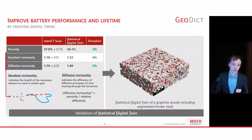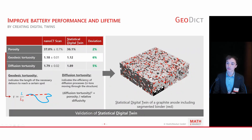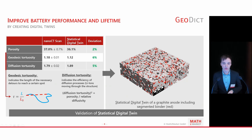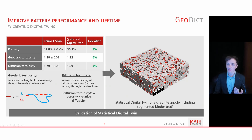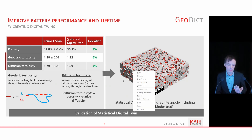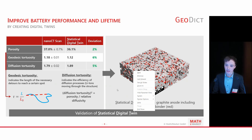This is an example where we have analyzed the porosity, but also the geodesic tortuosity and the diffusion tortuosity. As you can see, the digital twin matches the real-world structure quite well, which comes out of our microCT. Tortuosity is simply a measure of how far molecules or ions have to move to reach their target structure.